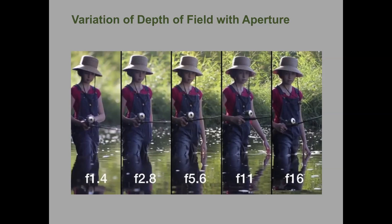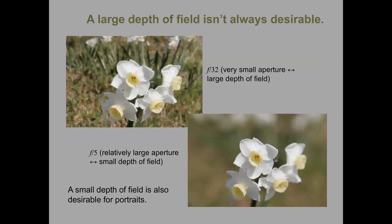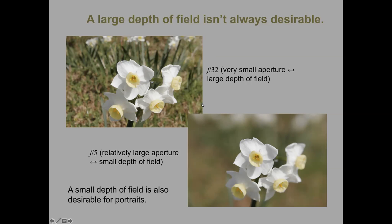Depending on what you want to do artistically — whether you want to focus on just one particular object or capture a whole landscape — you'll change the F-number of your lens. Large depth of field isn't always what you want. For portrait photography you might want a very small depth of field, meaning a very large aperture. These are artistic decisions made by changing the aperture size of your lens.